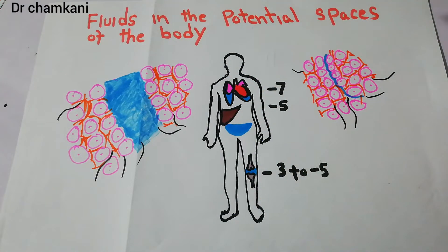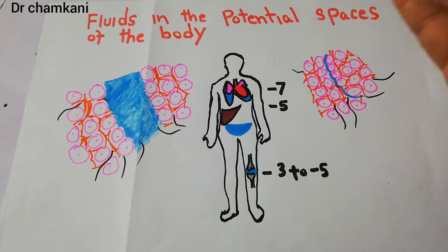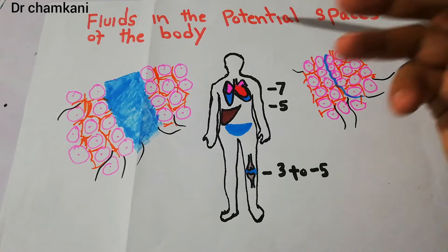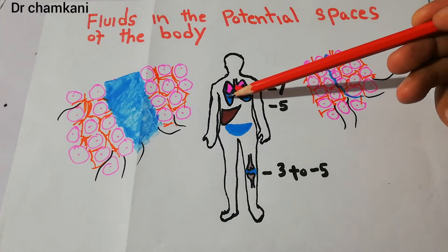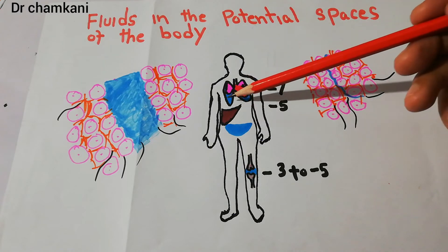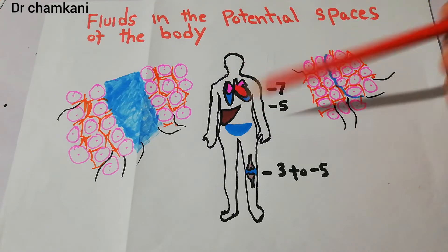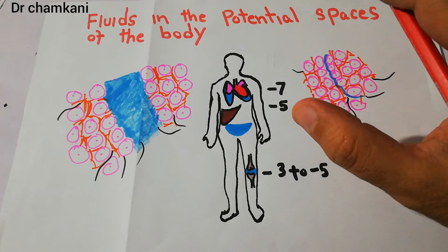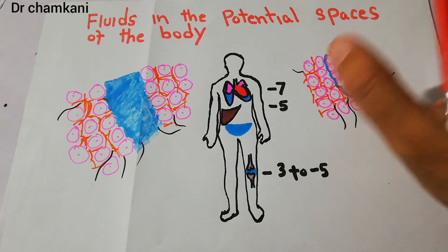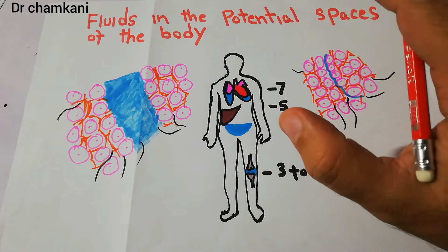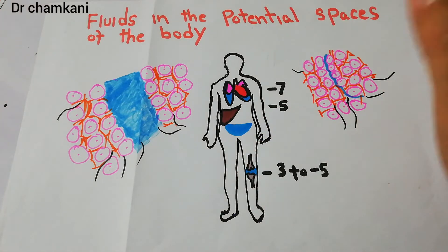Why are these spaces important, and why are we going to discuss them? This lecture is in continuation with our previous lectures about edema. Fluid accumulation in a potential space is also a kind of edema, because it is accumulation of fluid in an area. Although it is not directly in any tissue, it is a kind of extracellular accumulation of fluid. This is the last lecture about extracellular edema.